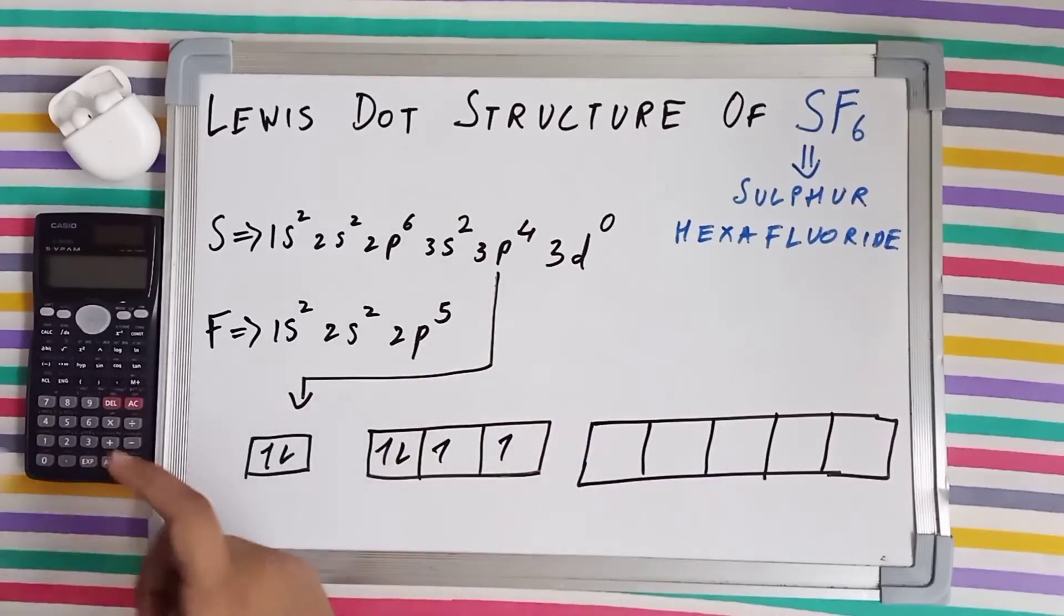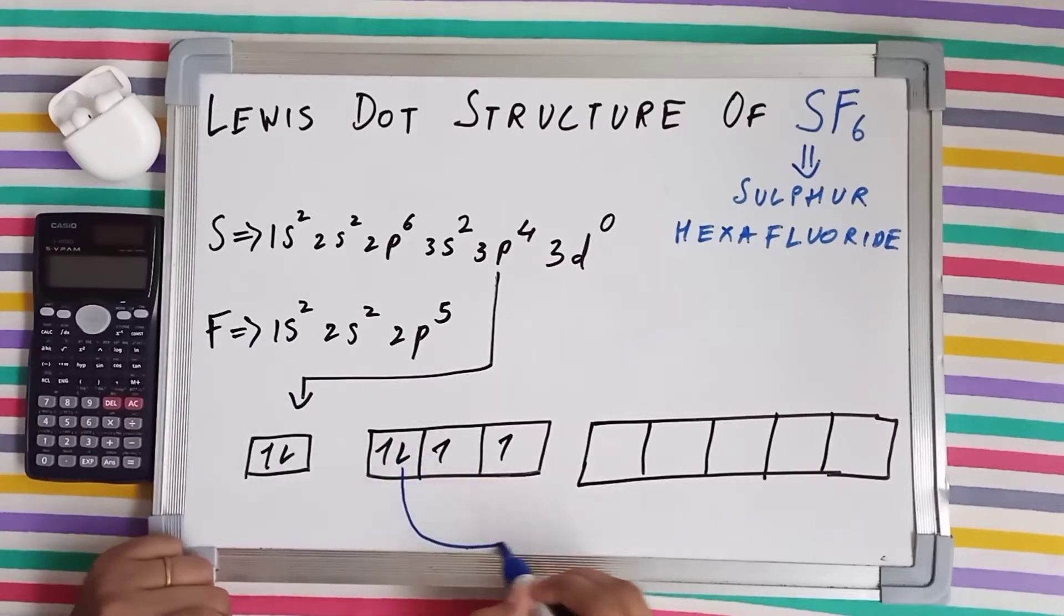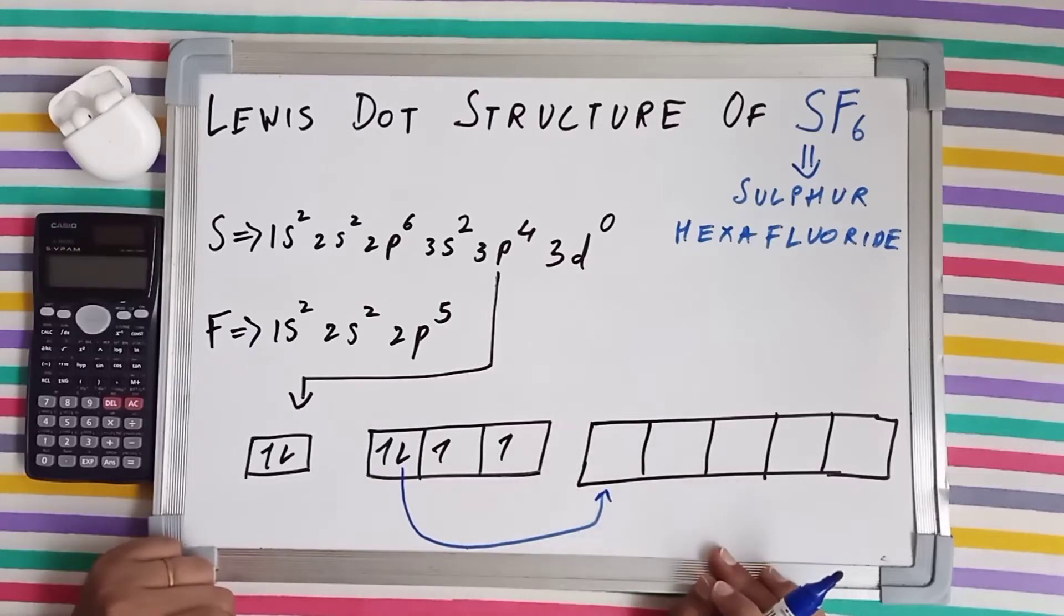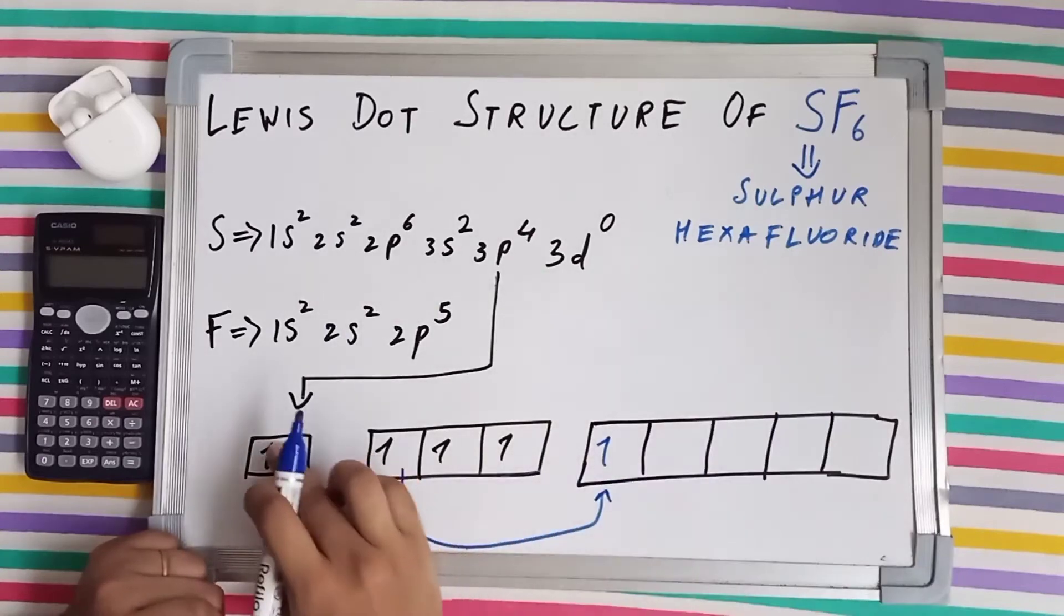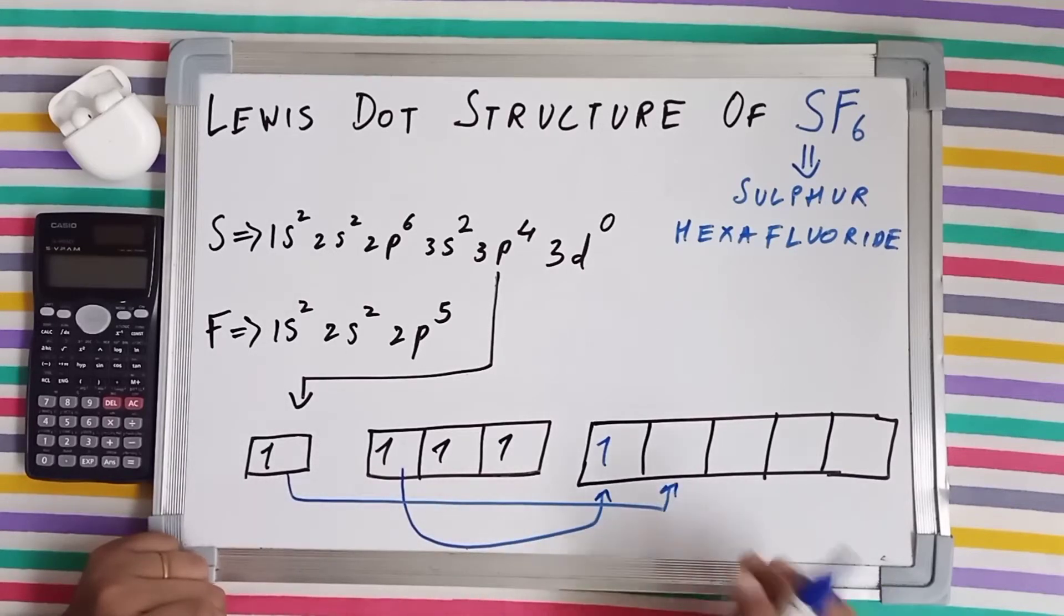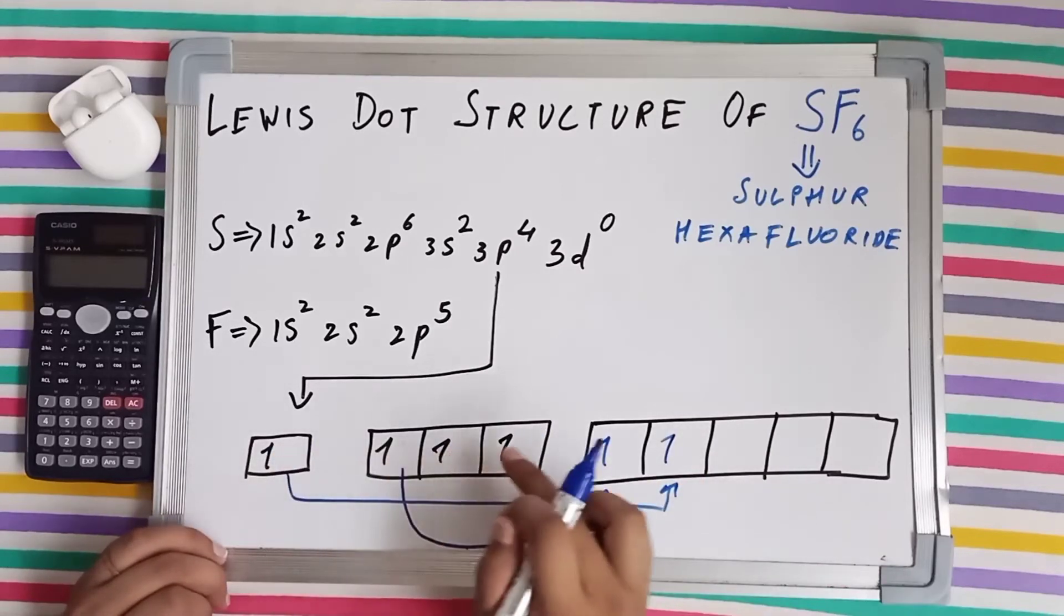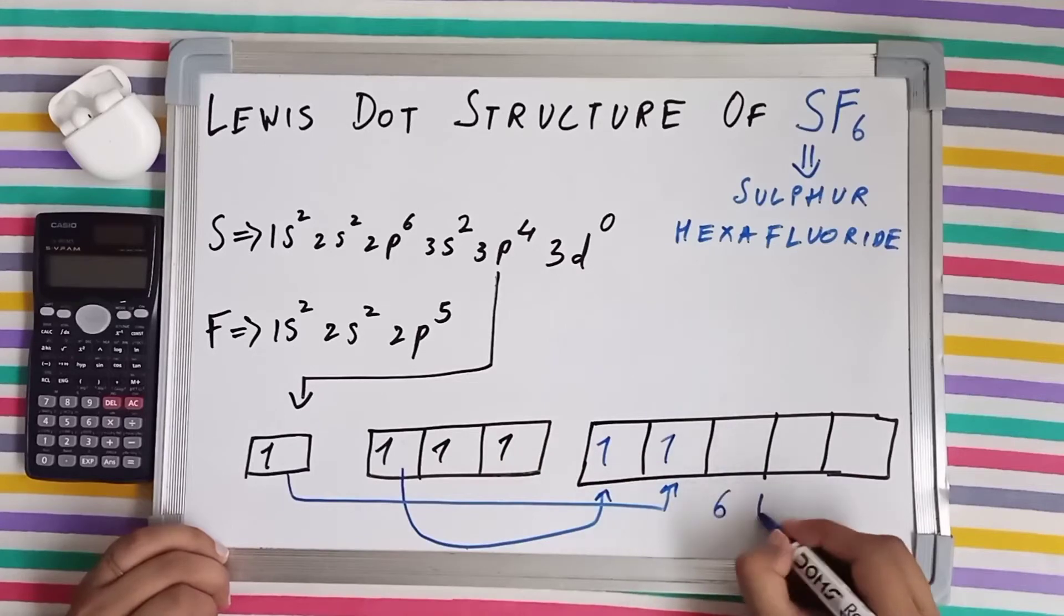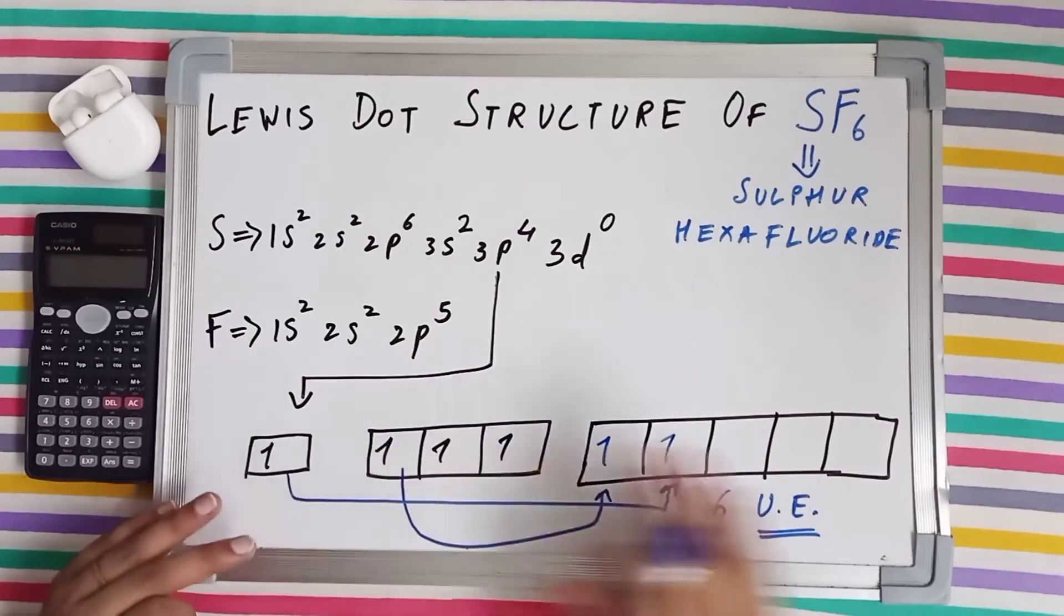But what would happen if this electron, this particular electron jumped from 3p to 3d. Now sulfur would have four unpaired electrons. And again next step, what would happen if this particular electron jumped and sits here. Now sulfur has six unpaired electrons. Six unpaired electrons. Now sulfur can make six bonds with fluorine. This is pretty clear.